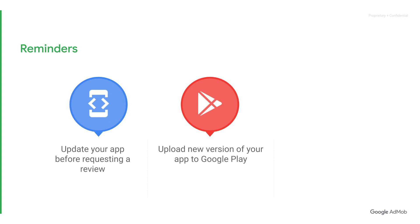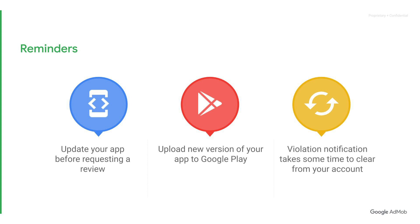If your review is accepted, ad serving will be re-enabled on your app within 24 to 48 hours. The Policy Center shows violating apps that have generated ad requests. Once the violation has been fixed and a review is successful, the notifications may take some time to clear from your account.